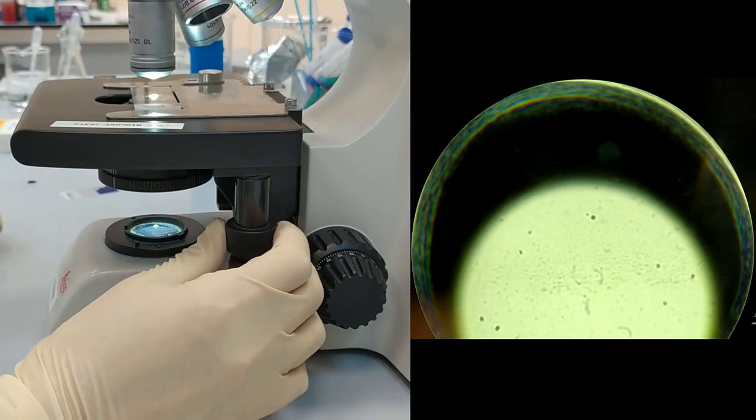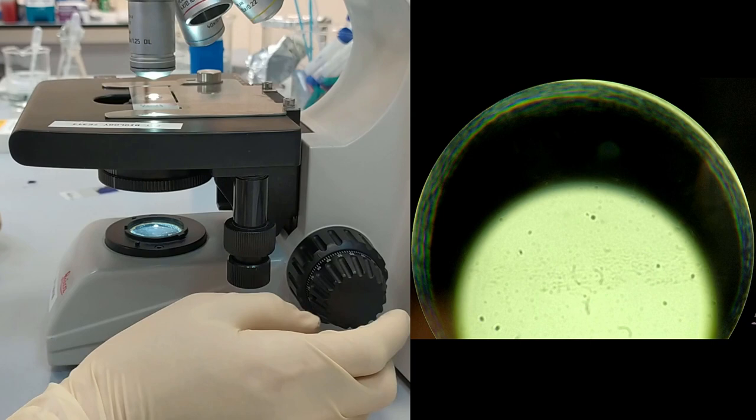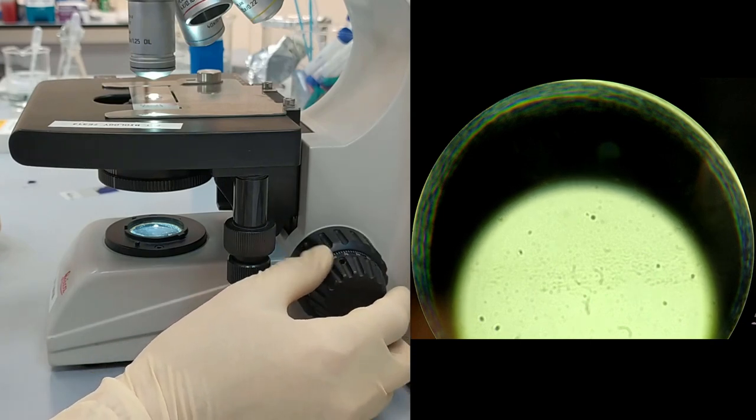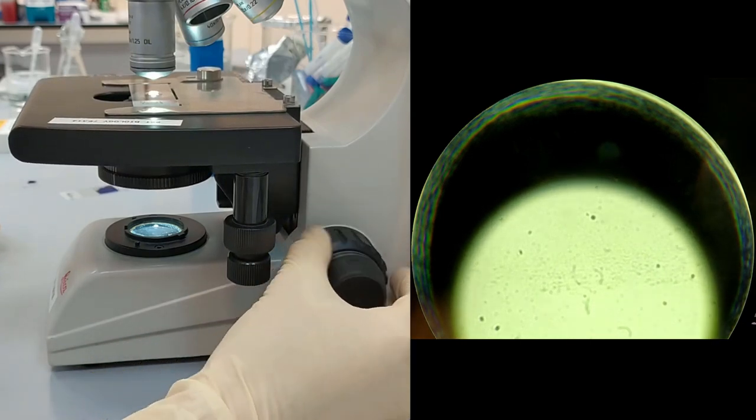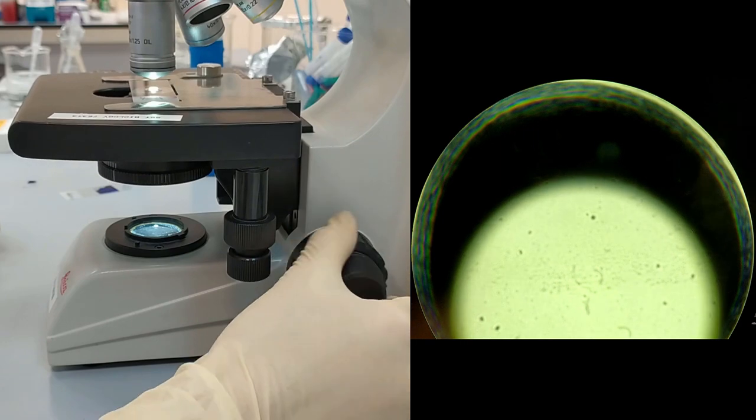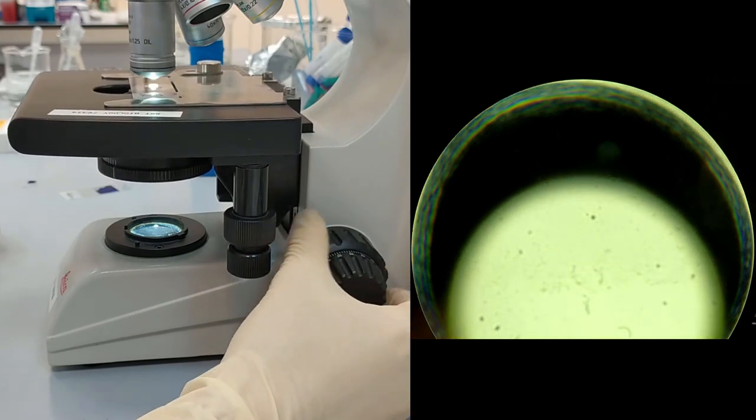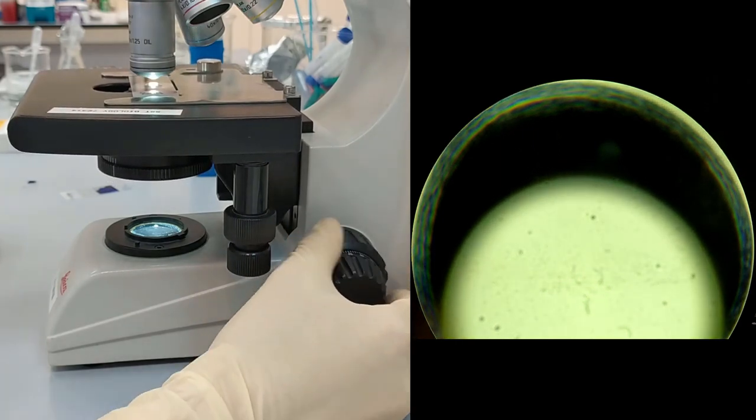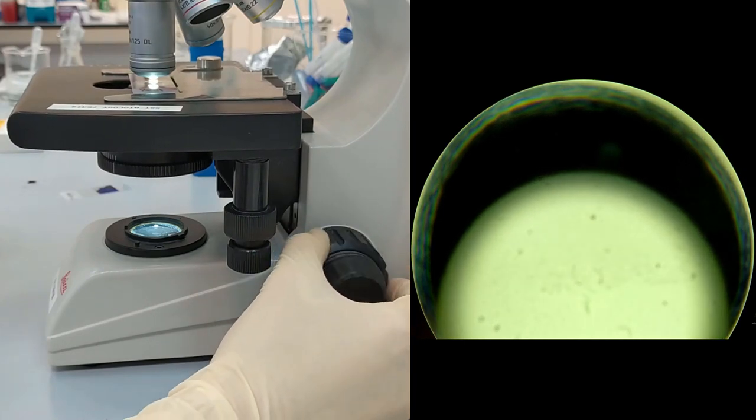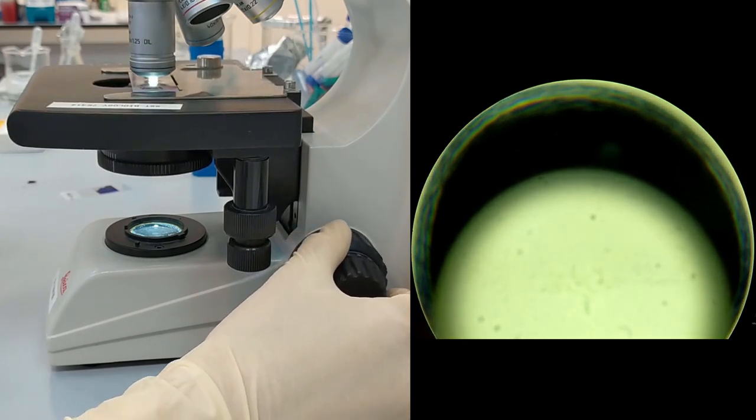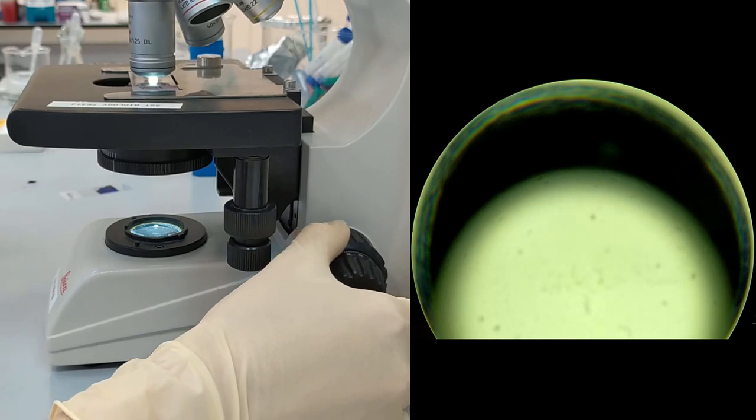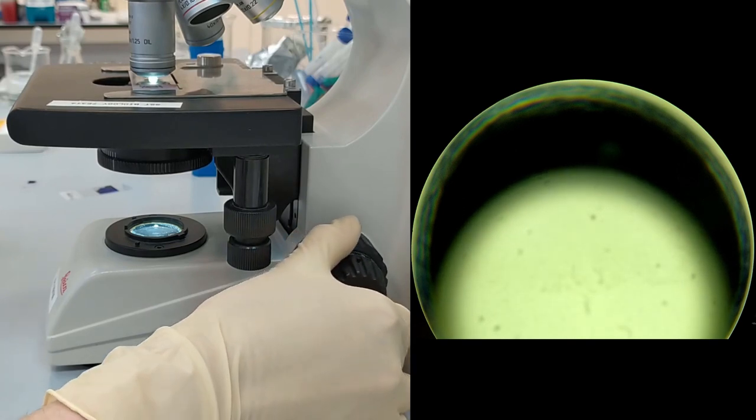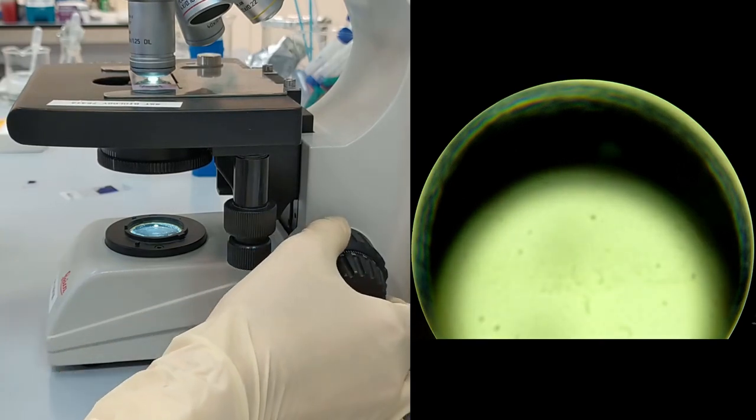Then we place the drop right beneath the objective. And under the control of eyes, we start rotating the big knob until we see the clear touching of the surface of the oil with the objective. You could clearly see that, like here.